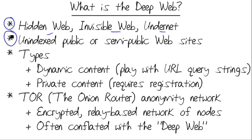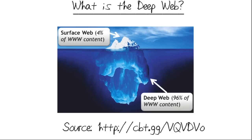These are servers running web server software and displaying HTTP or HTTPS content that is simply not, for many reasons, picked up by most search engines — of course, Google and Bing being the main ones. If you do a Google image search for Deep Web, this is the graphic that comes up a lot of the time — it's a useful metaphor for what the Deep Web means.